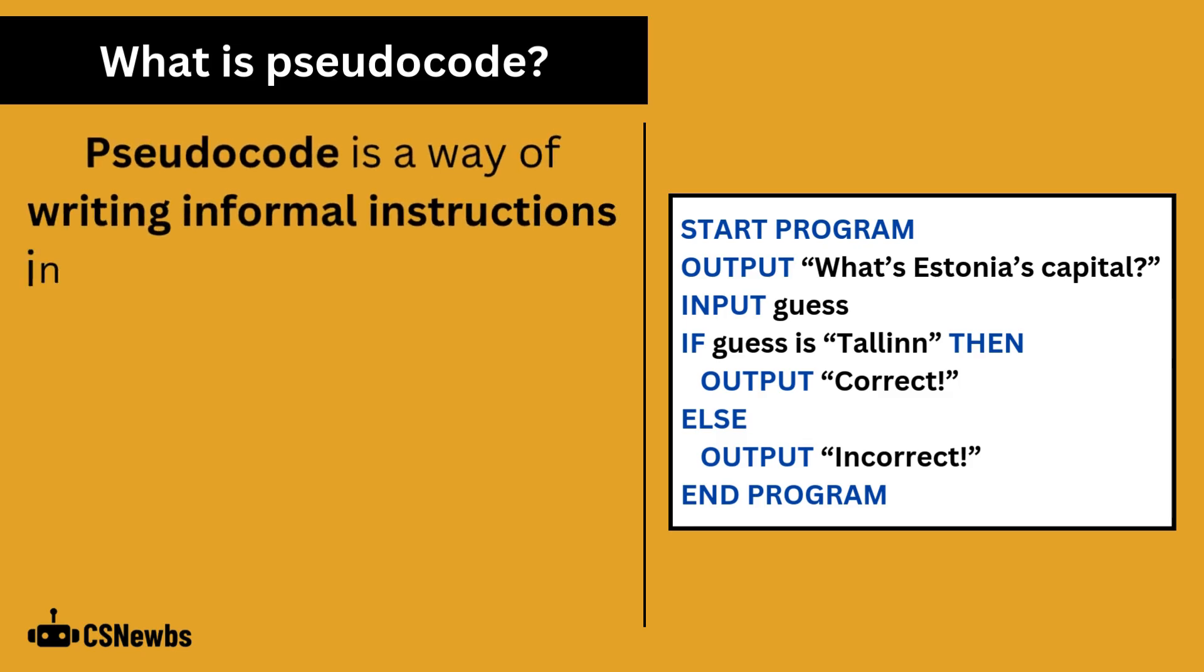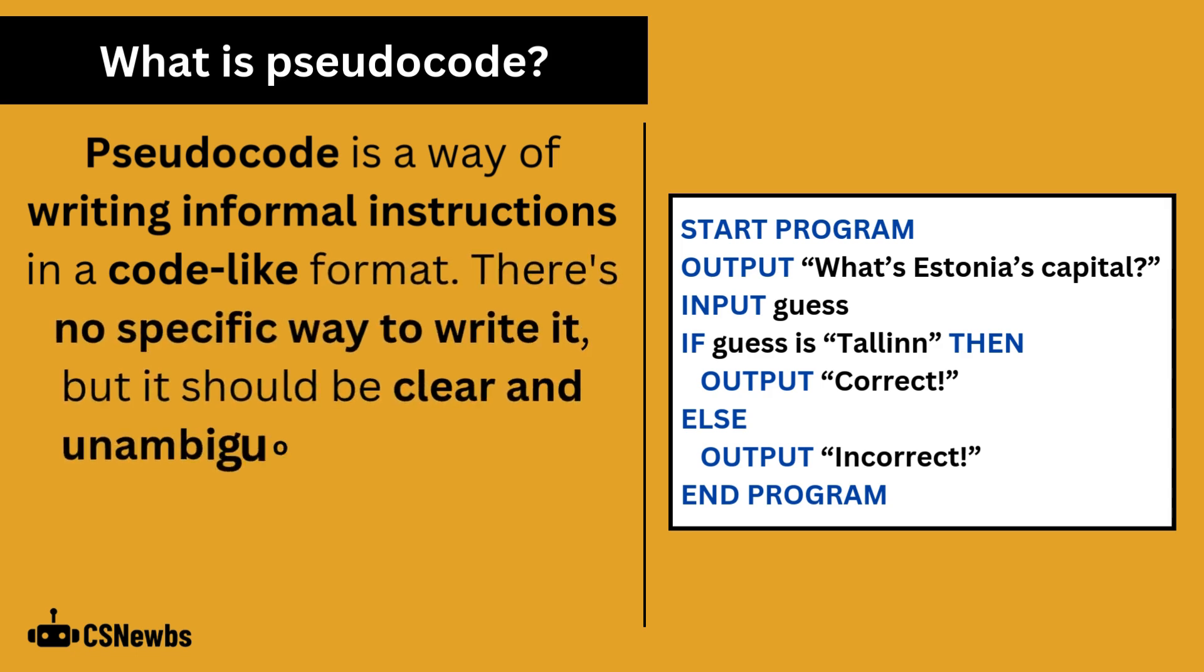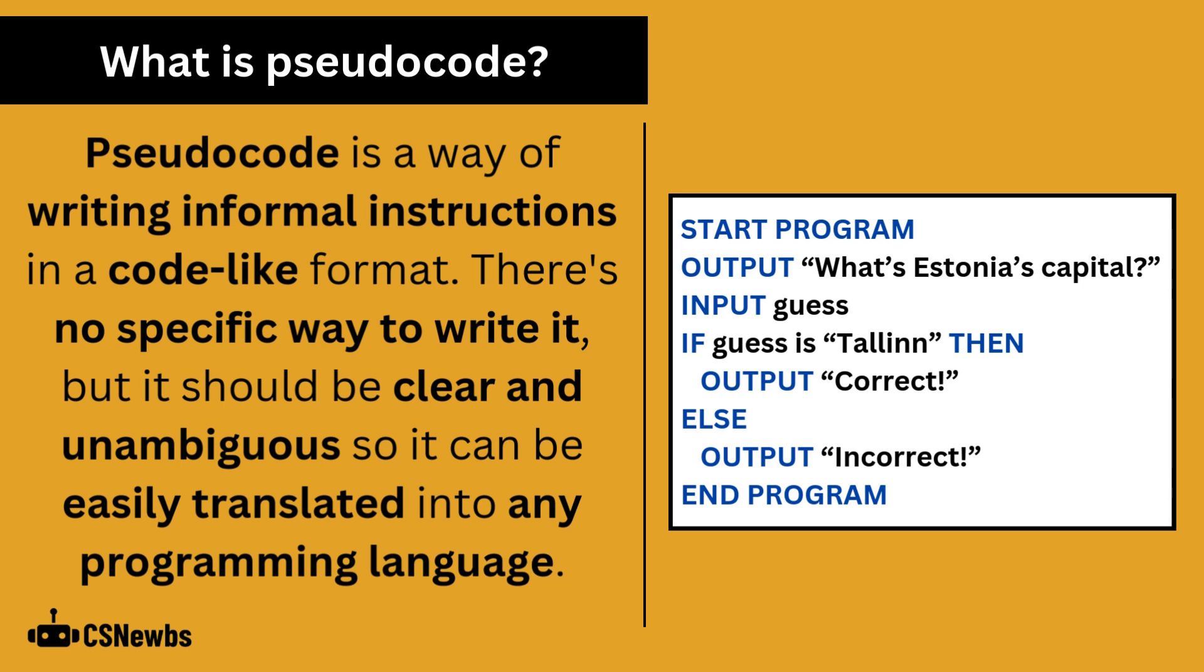Pseudocode is a way of writing informal instructions in a code-like format. There's no specific way to write it, but it should be clear and unambiguous so it can be easily translated into any programming language.